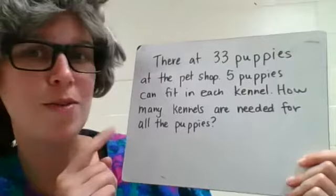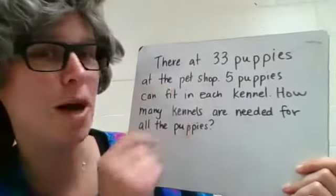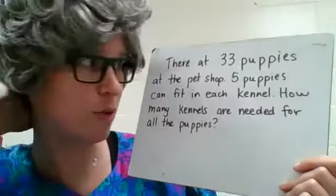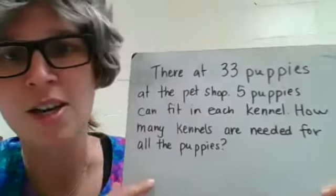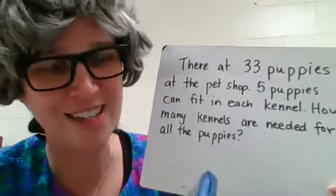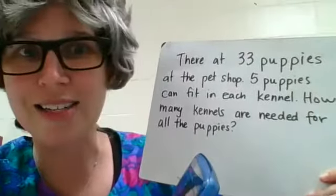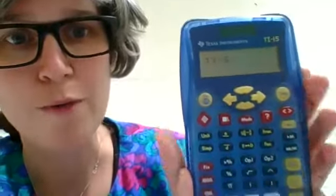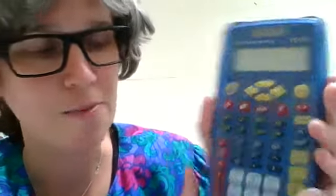Let's think here. I noticed that we've got an amount of puppies and that we're putting them equally into equal groups — all these little kennels. So I know I'm dividing. And I remember that I told you last time that we need to use the INT divide button. So I'm going to type in 33 INT divide 5, which puts my 33 puppies with five puppies in each kennel.